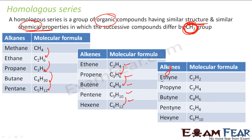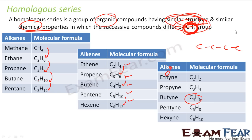If you take alkynes — here also if you see: ethyne, propyne, butyne, pentyne, hexyne — all these have similar structures. When I talk about butane, propane, or pentane here, I am talking about the straight-chain ones. I am talking about all straight ones because they all have straight structures.